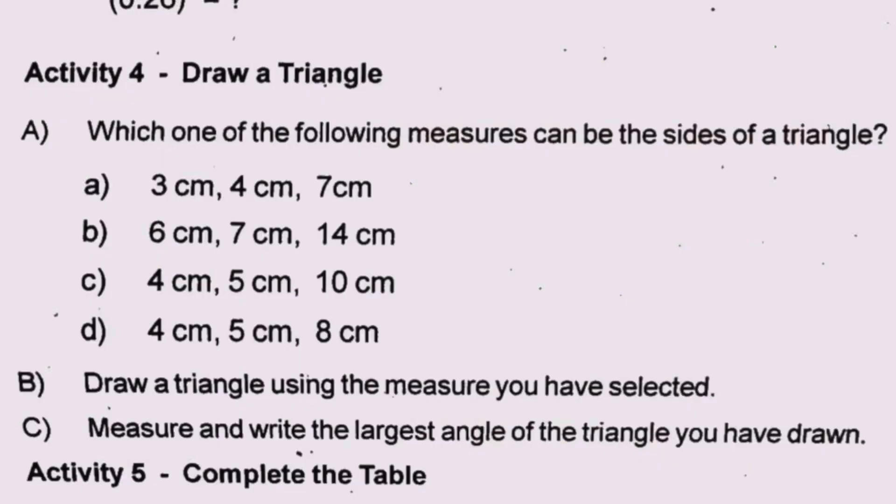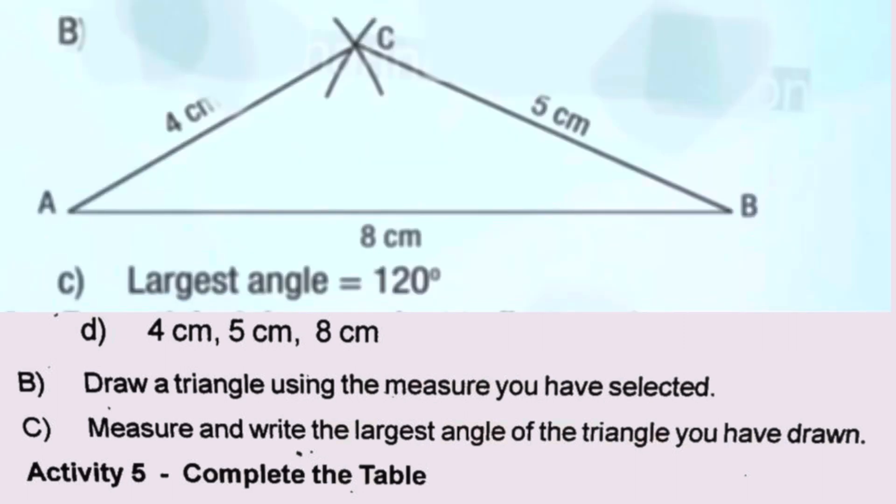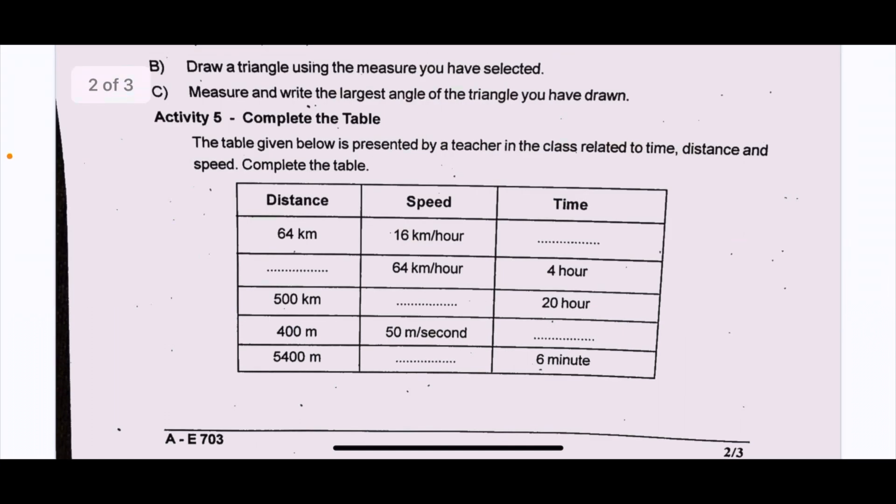Part B: Draw a triangle using the measure you have selected. Part C: Measure and write the largest angle of the triangle you have drawn. Activity 5: Complete the Table. The table given below is presented by a teacher in the class related to time, distance and speed.